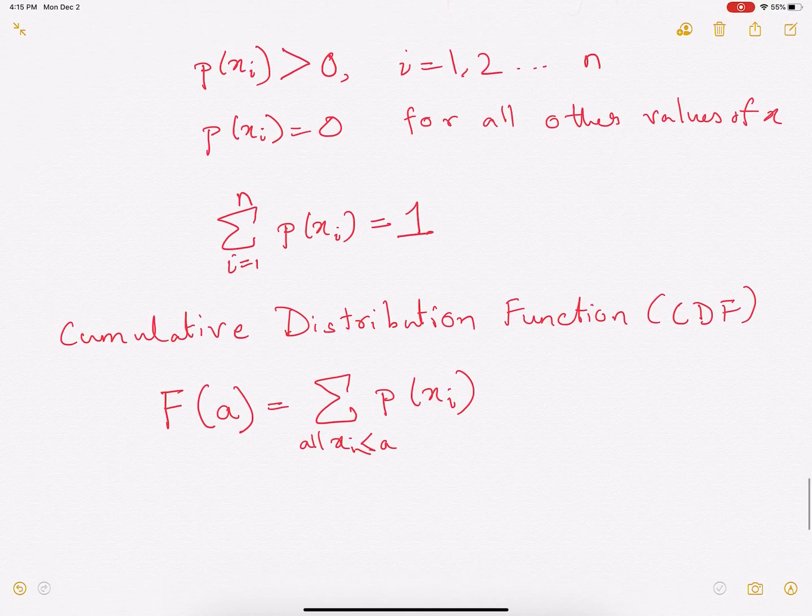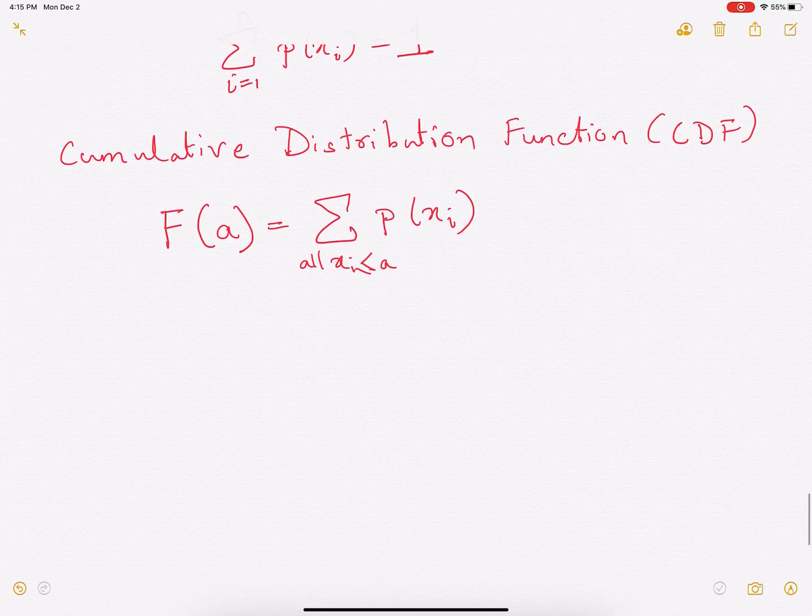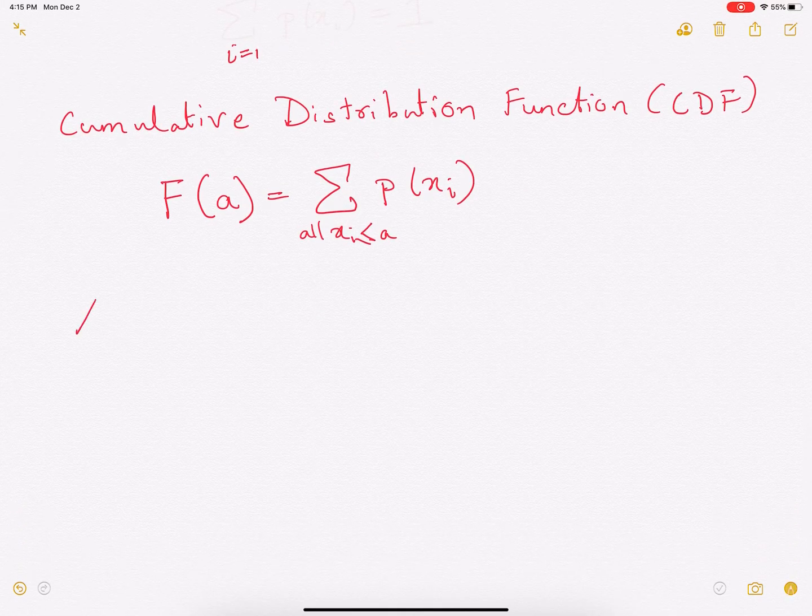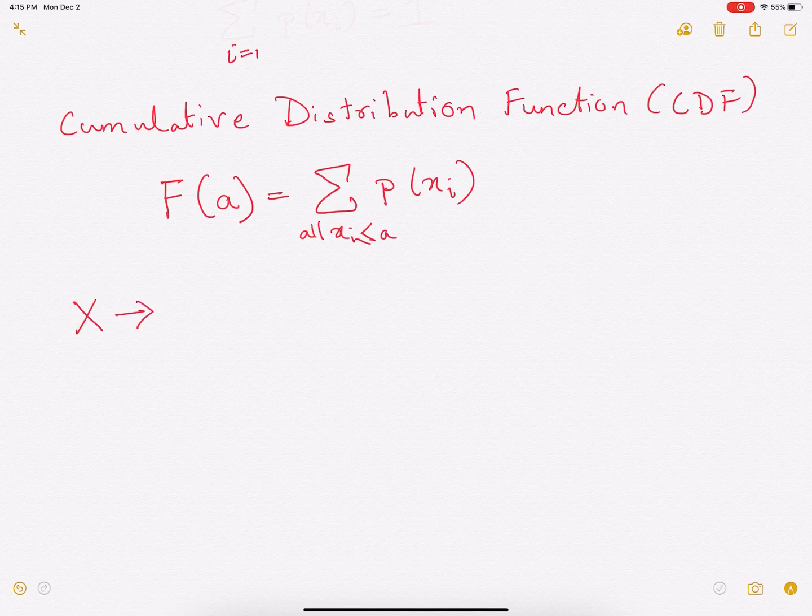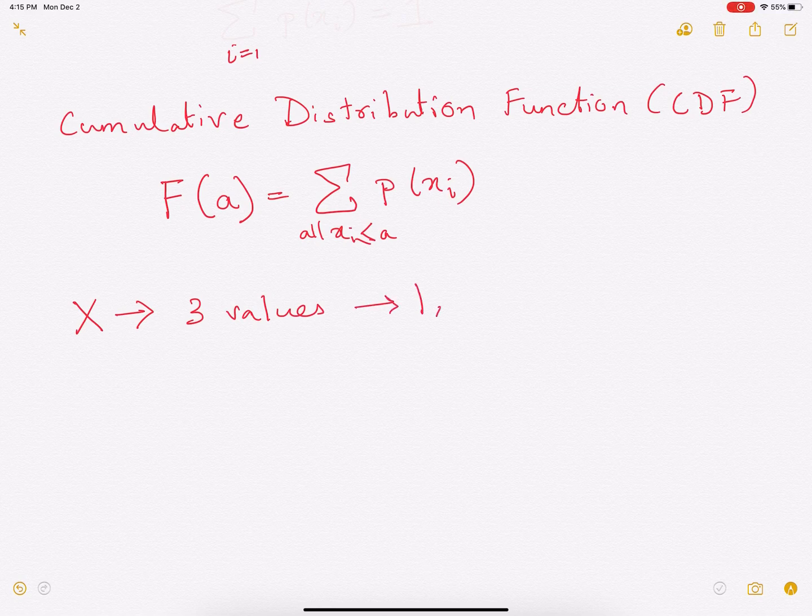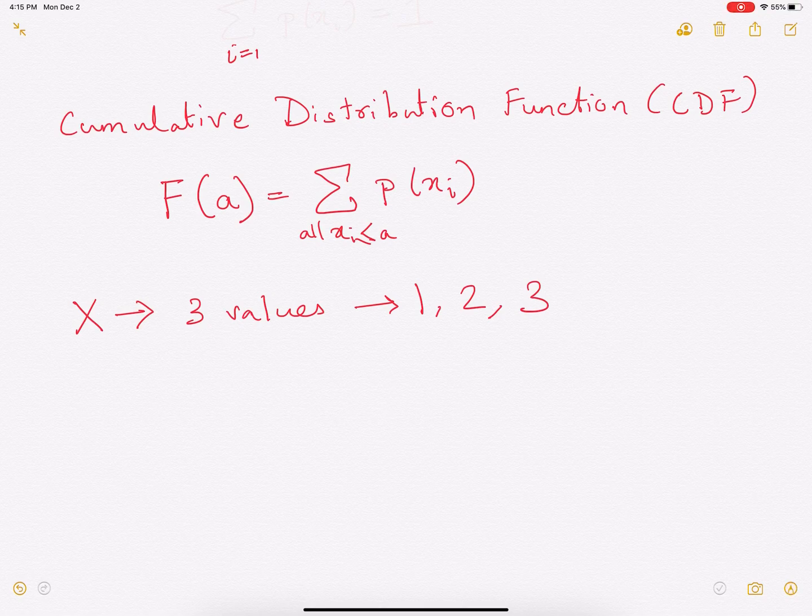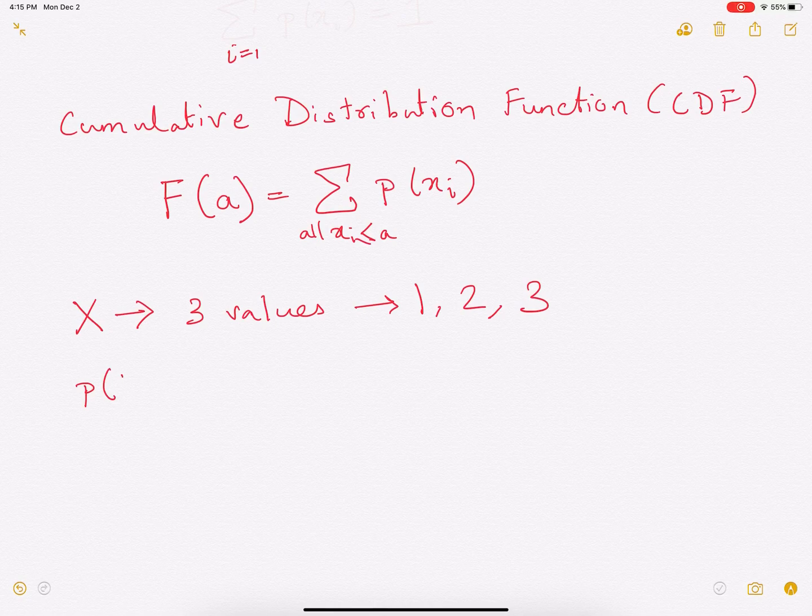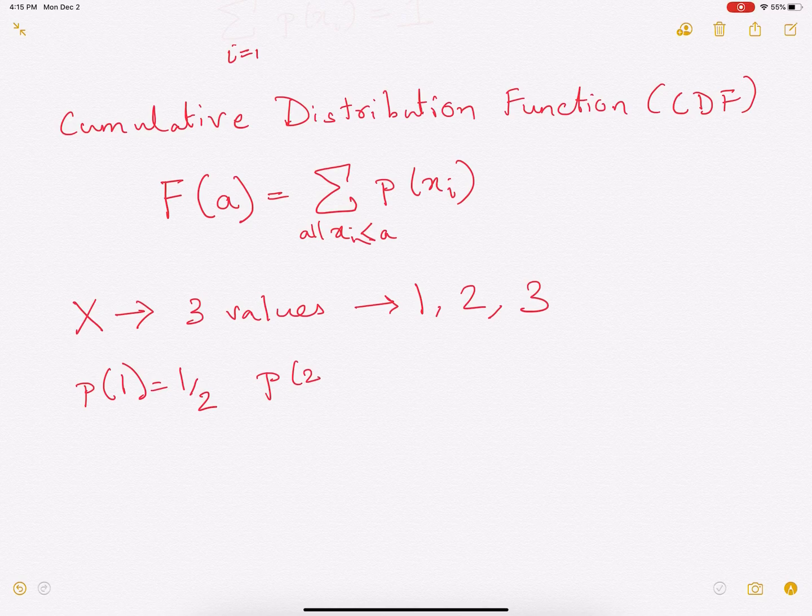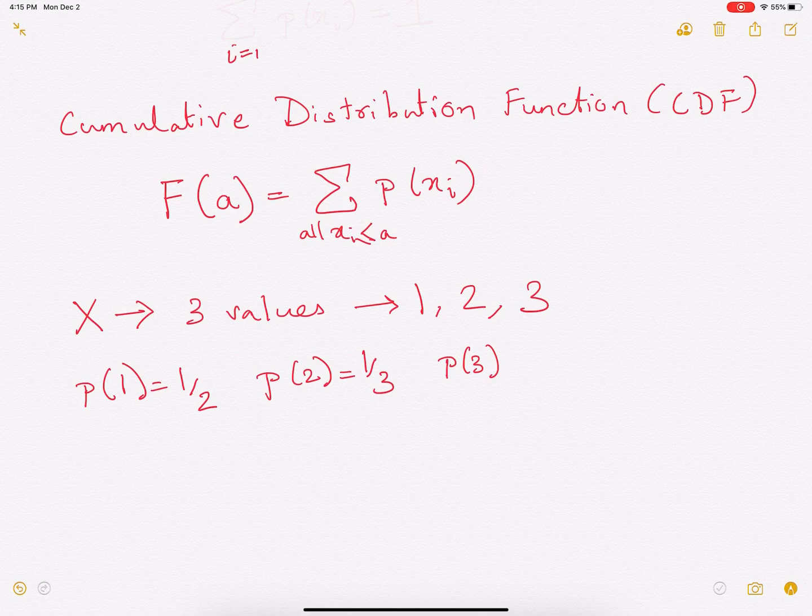So let's try to understand this with an example. So let's assume that x takes three values: 1, comma 2, comma 3. These are the three values of x. And let's assume the probability of 1 equals half. Probability of 2 equals one third. And probability of 3 will therefore be 1 over 6.